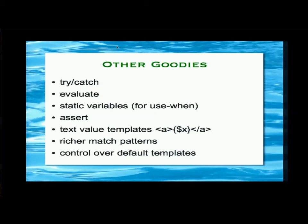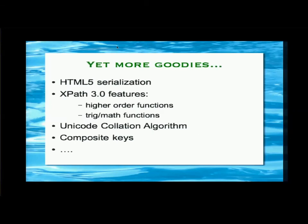There's more in match patterns, more control over default templates — you can have a default template which is the identity template. You can just declare that you want your default template to be a shallow copy and it gives you that declaratively. There's support for HTML5 serialization, though they keep changing HTML5 so I don't know what we do about that. Support for XPath 3.0 obviously — we've mentioned higher-order functions. The other most important thing is more functions, particularly the trig and math functions: if you're doing SVG output, you've now got a trigonometry library which is very useful. I never expected to be writing graphics programs in XSLT, but you can do it and it works very nicely.